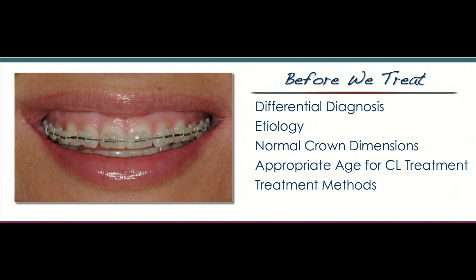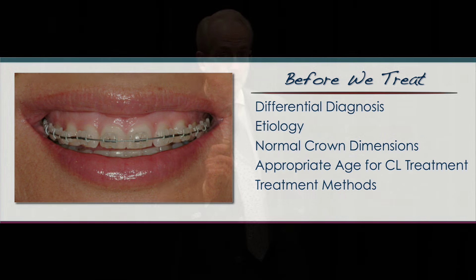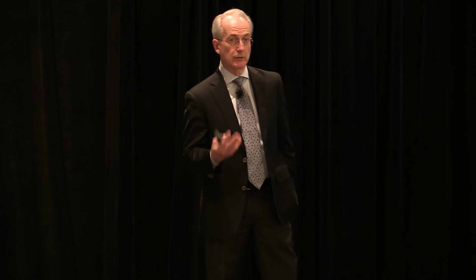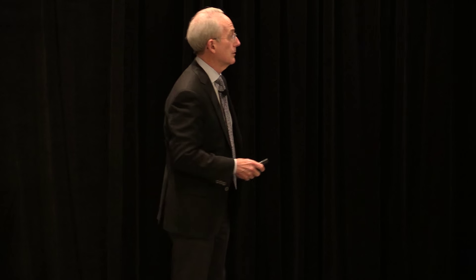Before we do any treatment, when a patient presents with a gummy smile, we need to go through a differential diagnosis to determine exactly what's causing it. We need to understand the cause of each particular item, what teeth should look like, and how long they should be relative to their width. Then the question comes up: at what age do we treat? At what age is appropriate at the lower end — for example, a patient who's had orthodontic treatment? And then we'll look at treatment methods as the final part of this lecture.